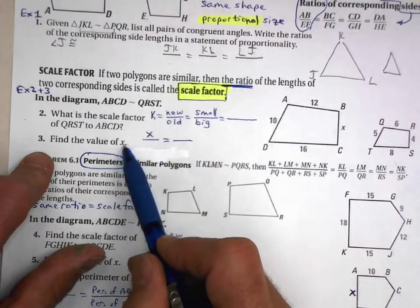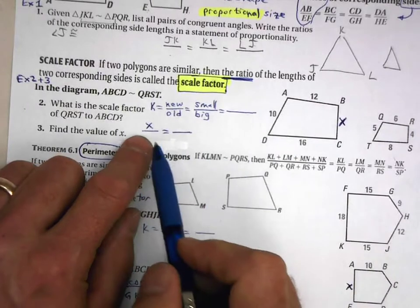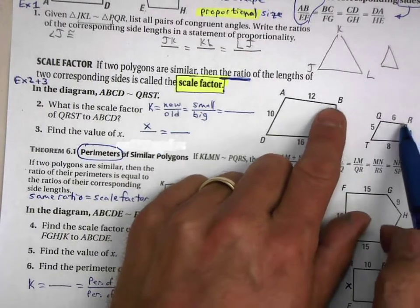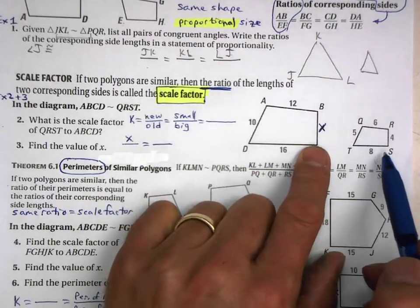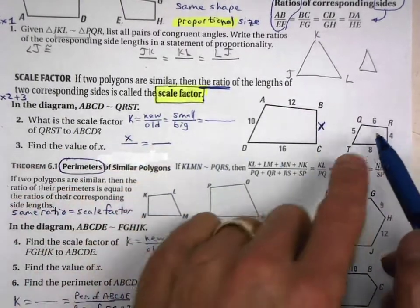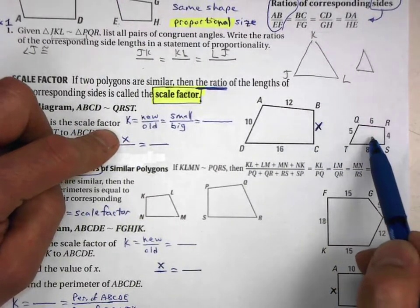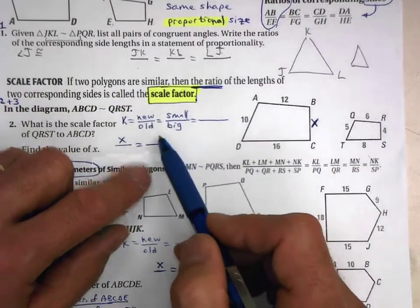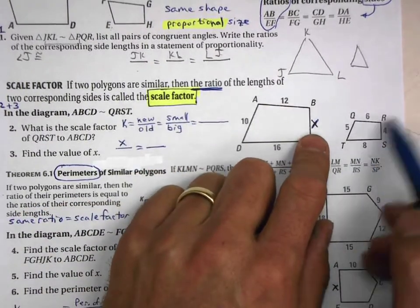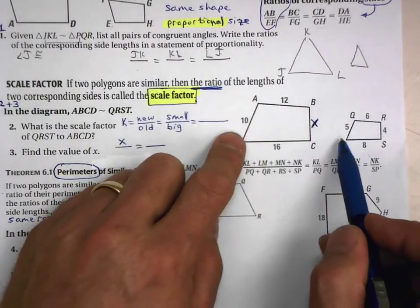To find x, start with x on top since x is on the bigger polygon. Then identify the corresponding side on the smaller polygon. Since you're going big to small, keep that same orientation for your known sides. For example, x over 4 equals either 10 over the corresponding side, maintaining big over small throughout your proportion.